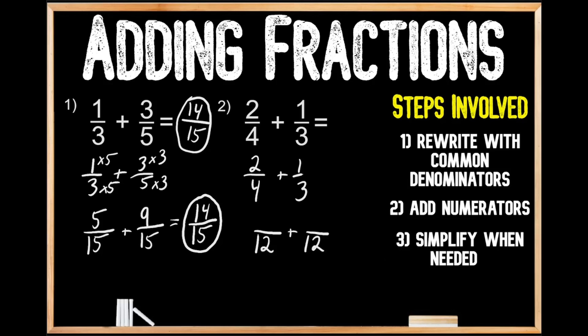We need to keep these fractions equivalent, so we multiply our numerator by the same value we multiplied our denominator by to get 12. We multiplied four times three to get 12, so we do the same to the numerator: two times three gives us six. For the second fraction, we multiplied three times four to get 12, so we do the same to the numerator: one times four gives us four.